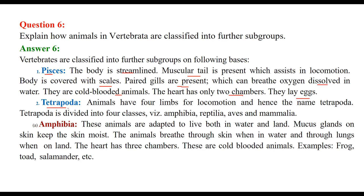Tetrapoda — tetra means four — refers to animals with four limbs for locomotion. They are divided into four classes: Amphibia, Reptilia, Aves, and Mammalia. Amphibia are adapted to live both in water and on land. They have mucous glands on the skin to keep it moist. They breathe through the skin in water and through lungs on land. The heart has three chambers. They are cold-blooded. Examples include frog, toad, and salamander.